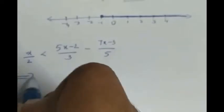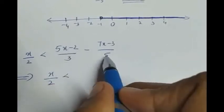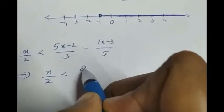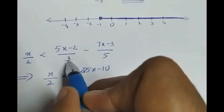x by 2 less than 5x minus 2 by 3 minus 7x minus 3 by 5. So first we have to solve that. x by 2 less than, I have to multiply 5x minus 2 with 5. So what I get is 25x minus 10, and 7x minus 3, with the negative is there, or 3 is there.